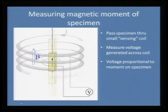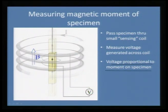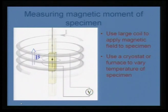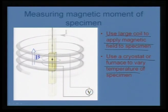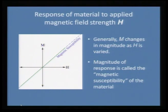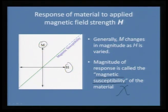Measuring the magnetic moment of the specimen — we can actually pass the material through the solenoid and measure the voltage generated across the coil, which is proportional to the moment on the specimen. That is the way we measure the strength of the magnetic moment. We can also use a large coil to apply a magnetic field to the specimen, and this same measurement can be done using either a furnace for high-temperature applications or a cryostat for low-temperature applications. The way the material responds is actually linked to the susceptibility — a value which is dependent on both magnetization as well as H. We will come to the definition of susceptibility, usually denoted as chi (χ).